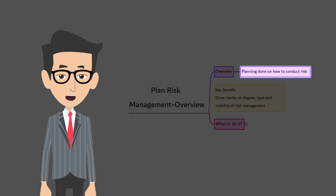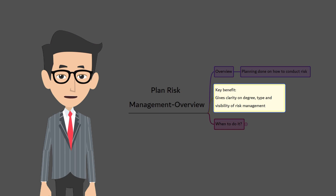As a part of the planning, the potential areas of risk in the project are identified by the project participants. This process also identifies who will be involved and how the team will go about performing risk management. The key benefit of this process is that it gives clarity on degree, type, and visibility of risk management to stakeholders.